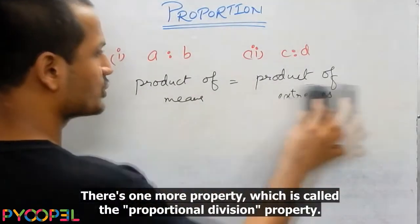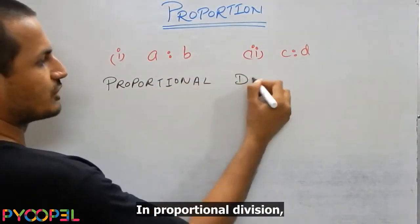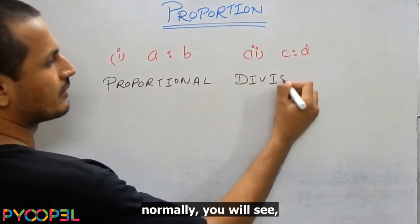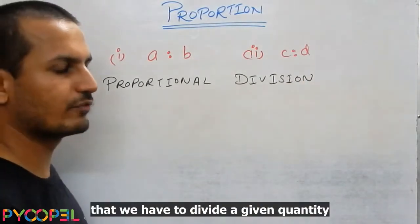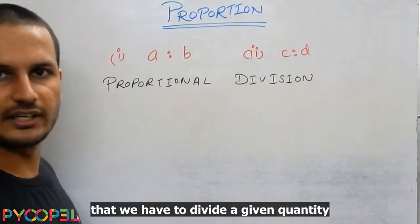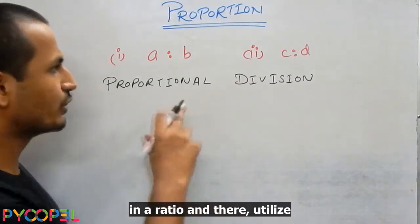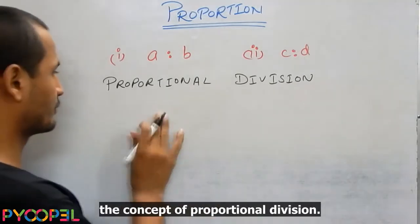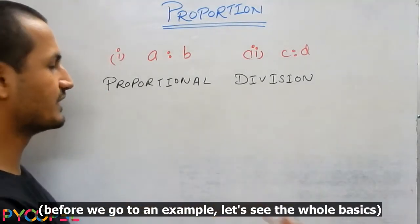There is one more property which is called the Proportional Division property. In Proportional Division, normally you will see that we have to divide a given quantity in a ratio and there we utilize the concept of Proportional Division. For example, before we go to an example, let's see the whole thing.